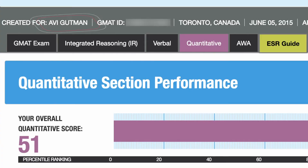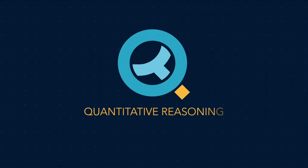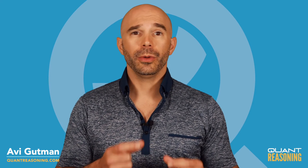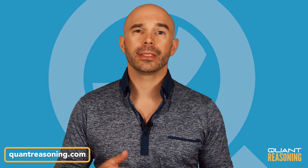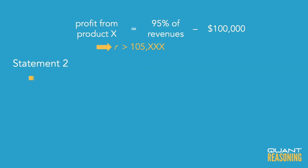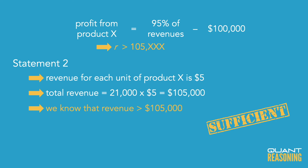Now that we know revenues were more than just over $105,000, we can evaluate the statements. I'll start with statement two because it tells me exactly how much each unit was sold for. If each unit was sold for $5,000, does that mean we sold more than 21,000 units? Yes — with 21,000 units, revenues would have been $105,000, and we know revenues were more than a bit over $105,000. So we definitely sold more than 21,000 units. Statement two is sufficient on its own, so A, C, and E are eliminated. We're down to B or D.